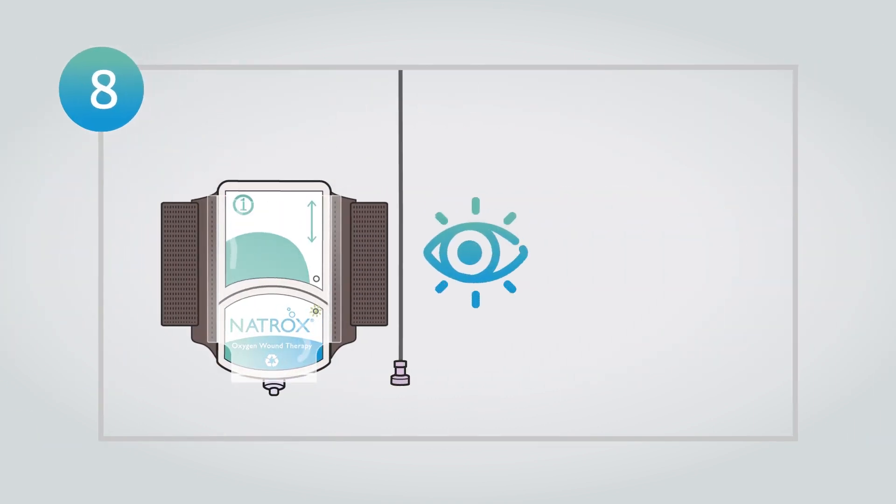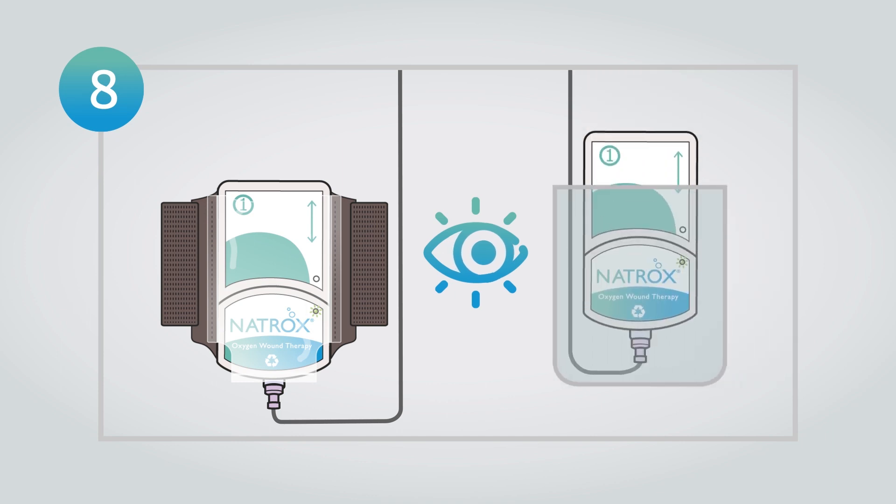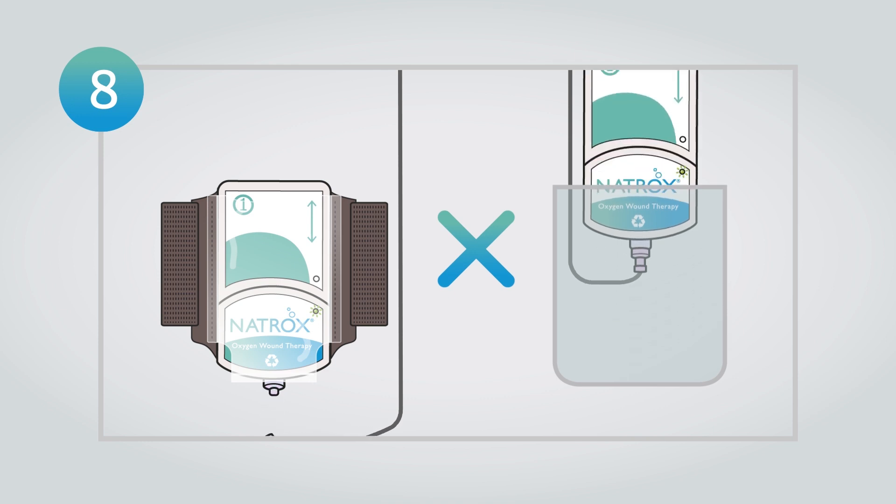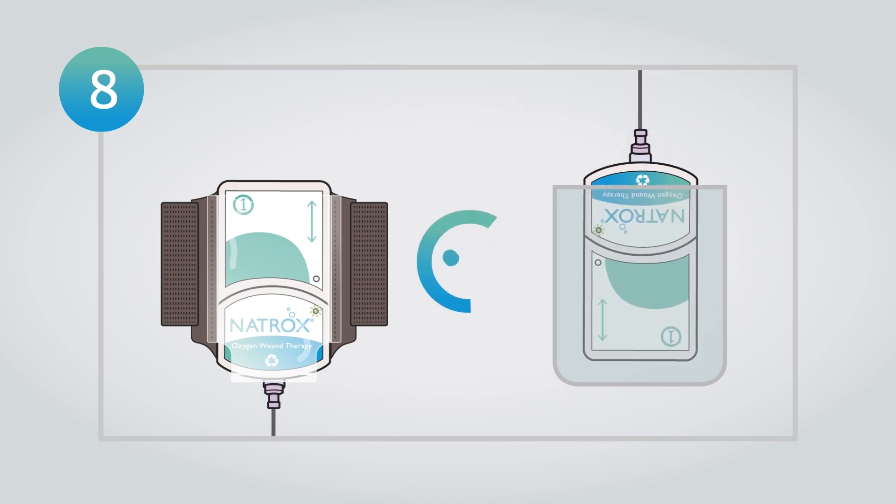Position the OG either in the holster provided or where the user finds it most comfortable. Care should be taken that the device is not positioned in such a way that the tubing is bent or distorted.